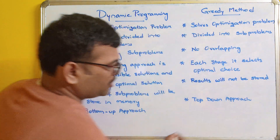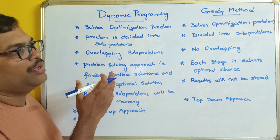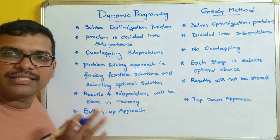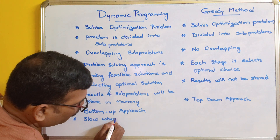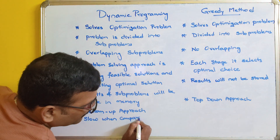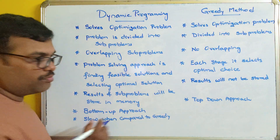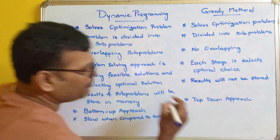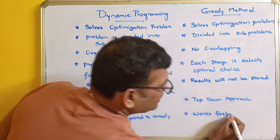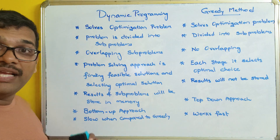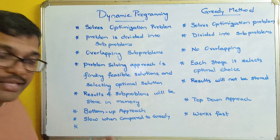When compared to dynamic programming, the greedy method works fast. Dynamic programming is slow when compared to the greedy method, and the greedy method works fast when compared to dynamic programming.